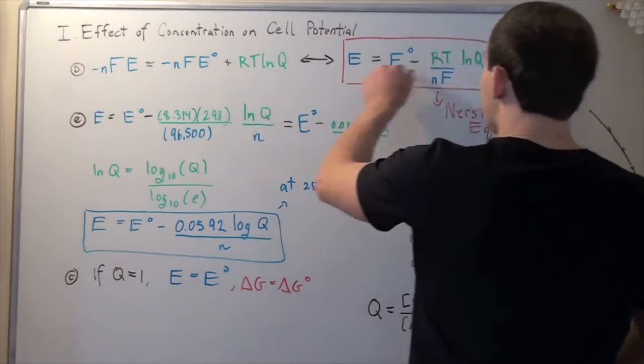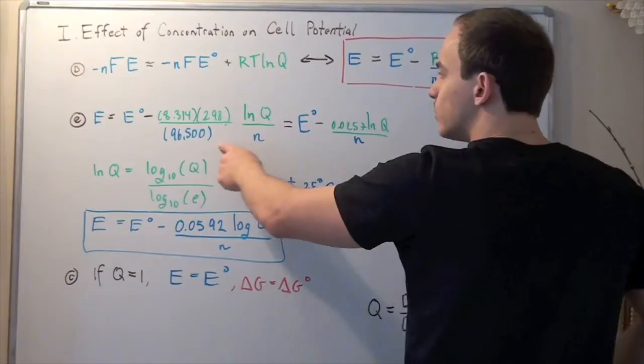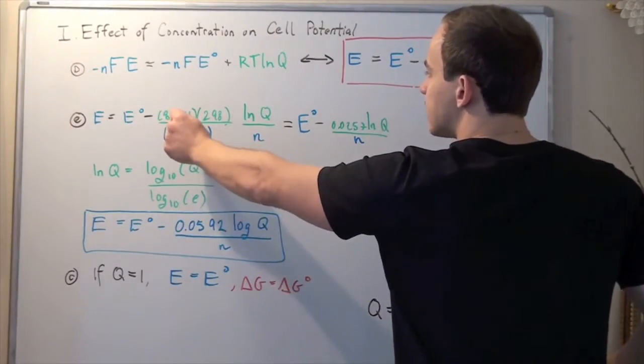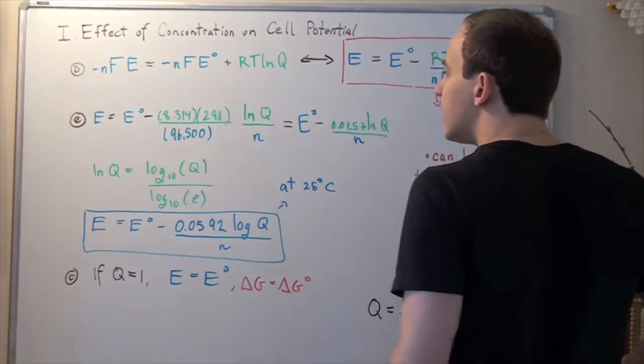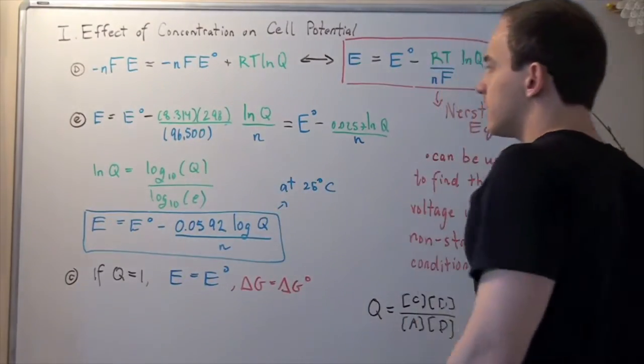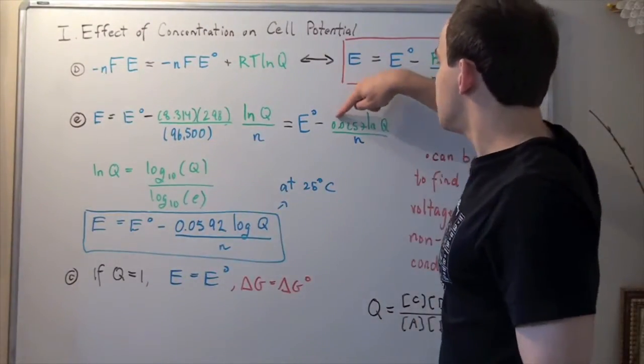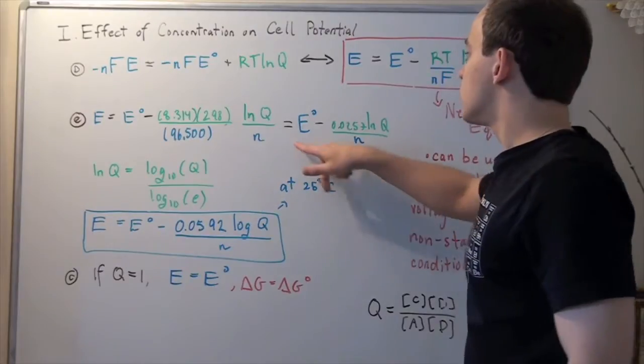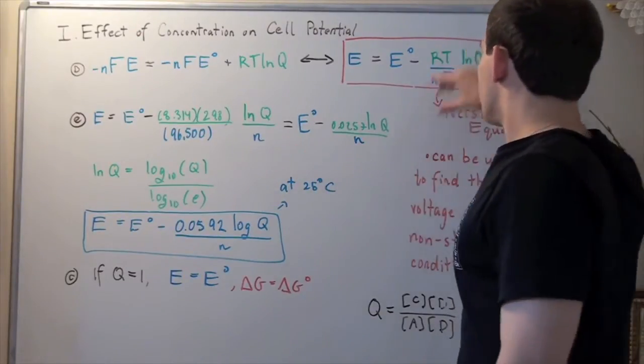We rewrite this formula, we get this. We plug in our gas constant R, our temperature in Kelvin, and Faraday's constant. We plug this into the calculator, and we get this number to be 0.0257. So this is a simplified version of this expression.